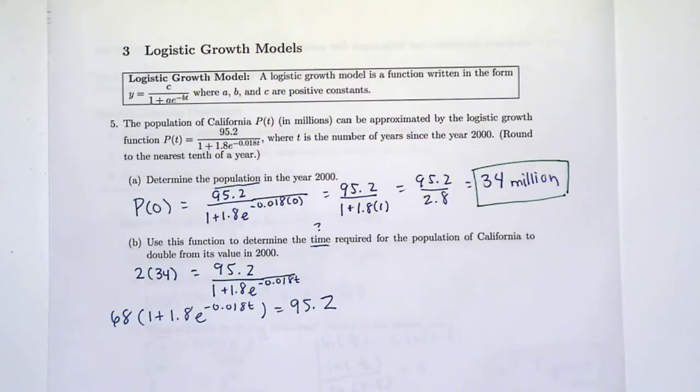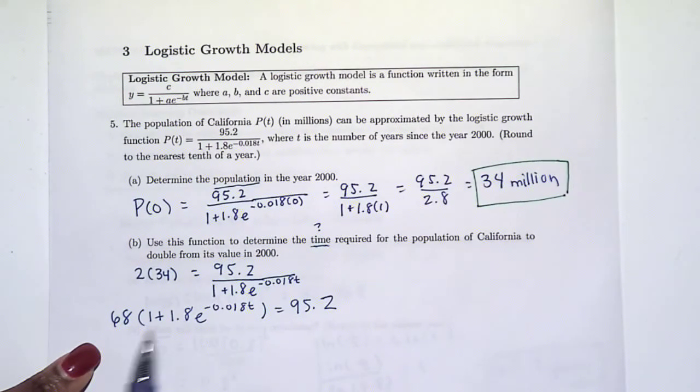I'm trying to get t by itself, so I need to undo everything that is happening. The next thing that is happening is the whole thing is being multiplied by 68. I'm going to divide by 68 on both sides.